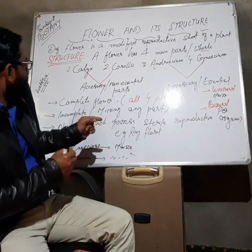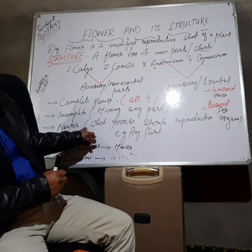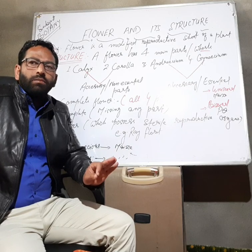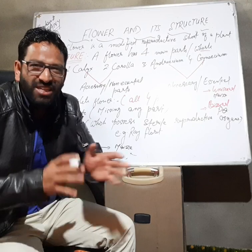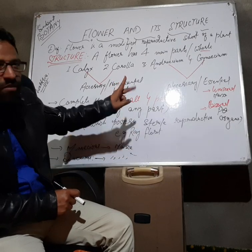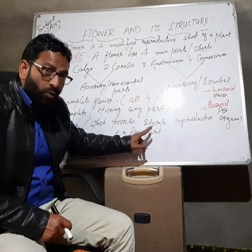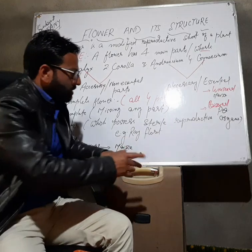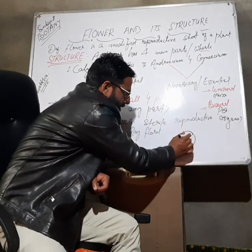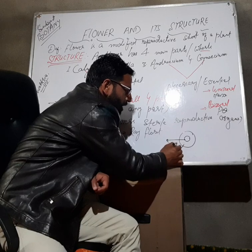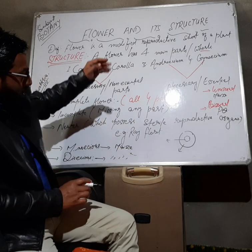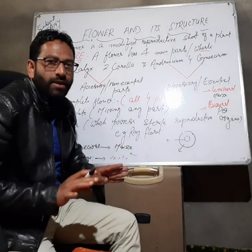After that, there is a flower called a neuter flower. A neuter flower means the flower which possesses non-functional male and female reproductive organs. An example is the ray florets of the sunflower. Sunflower possesses two types of flowers: disc florets in the center and ray florets on the outside. The ray florets are neuter flowers — their male and female reproductive organs are sterile and non-functional.